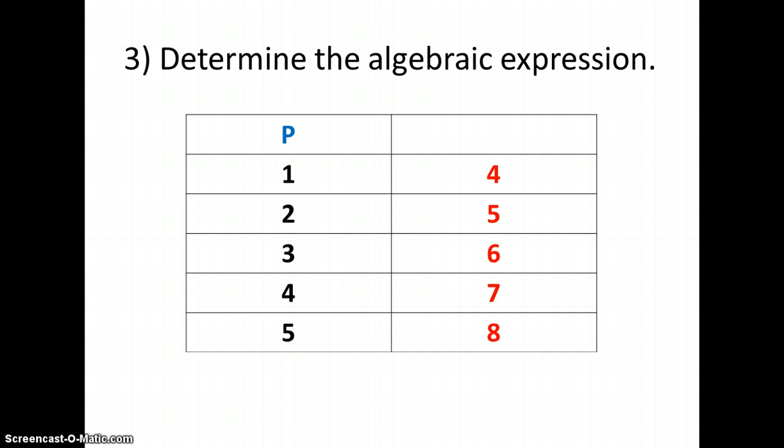I would look on my algebraic expression column and say, what am I increasing by each time here? In this case, each time I am increasing by 1. So that tells me I am going to have a 1 before my p. But 1 times 1 does not equal 4, and 2 times 1 does not equal 5.